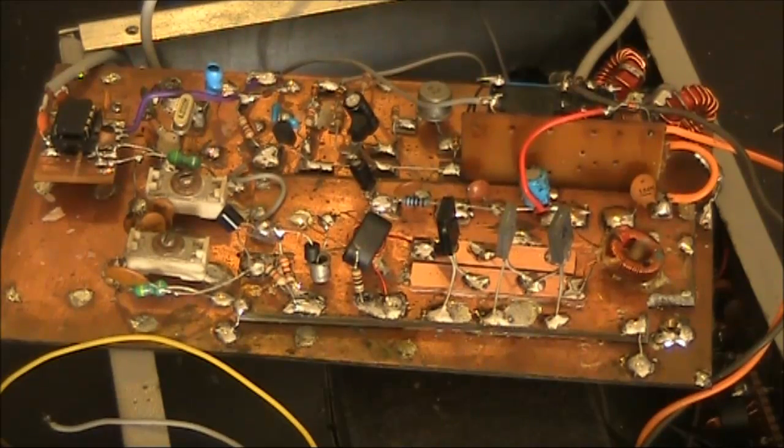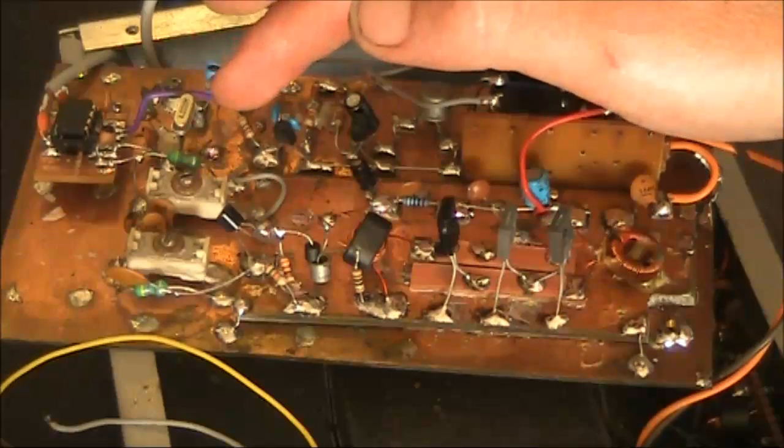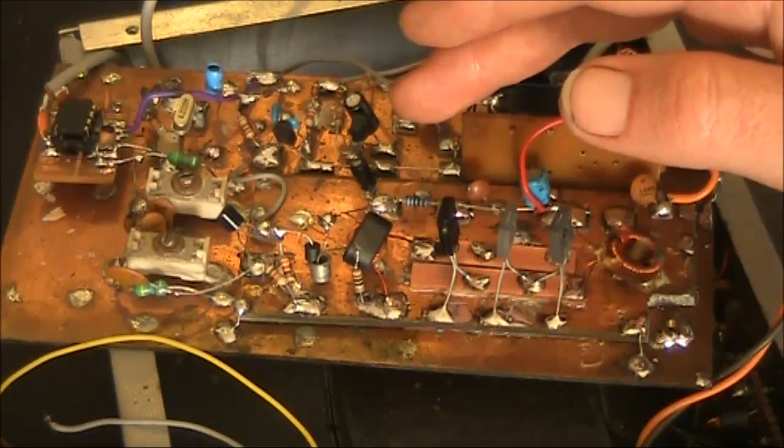One of the most complex parts of a QRP transceiver to build, especially if making it from scratch, is the transmit power amplifier chain. You're amplifying a signal from a few milliwatts up to at least several watts, and a lot of things can go wrong.